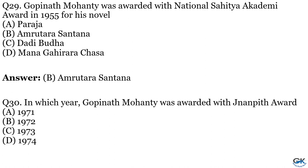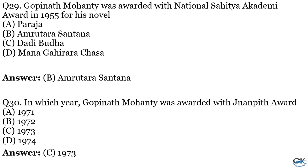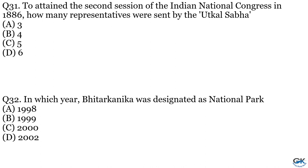Question No. 30: In which year was Gopinath Mohanty awarded the Jnanpith Award? Option A: 1971. Option B: 1972. Option C: 1973. Option D: 1974. The answer is Option C, 1973. Question No. 31: To attend the second session of the Indian National Congress in 1886, how many representatives were sent by Utkala Sabha? Option A: 3. Option B: 4. Option C: 5. Option D: 6. The answer is Option B, 4.